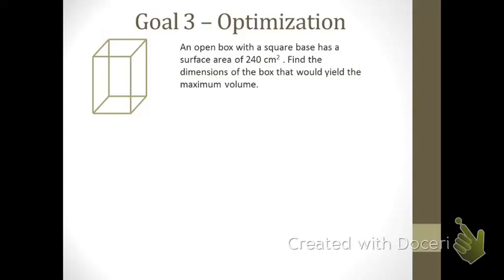Here we go with our next optimization problem — another geometry problem. Your learning goal is to optimize a function, which always means to maximize or minimize some value. Just as with the previous problem, we're going to try to maximize something here. Take a moment to read the problem, and then I'll talk about how you would find the maximum volume associated with this box.